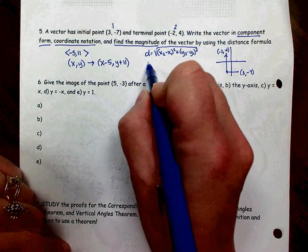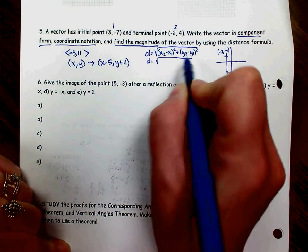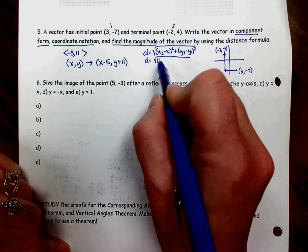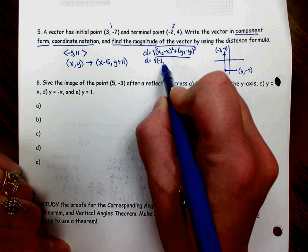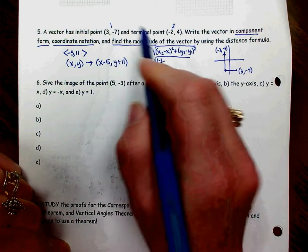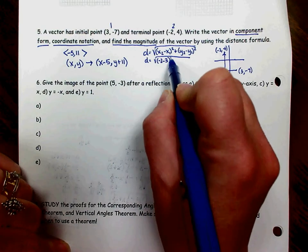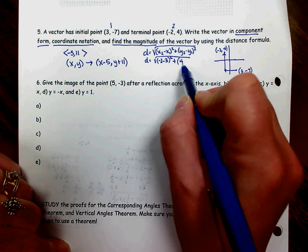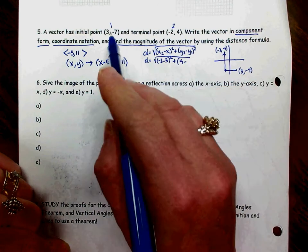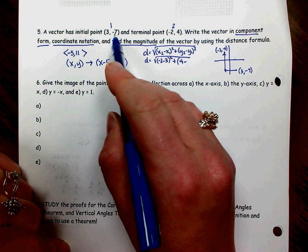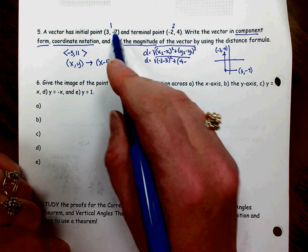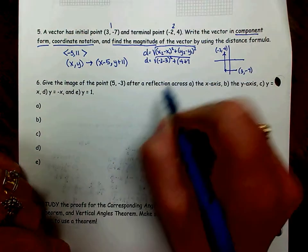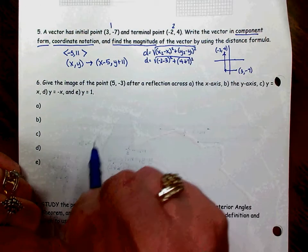So now to find our distance, we're going to take the square root of our second x, second x is -2, minus our first x, which is 3, and then square that, plus my second y minus my first y, which is -7. 4 minus -7 is the same thing as 4 plus 7. So when you subtract a negative, you can change that to addition, and then don't forget to square that.